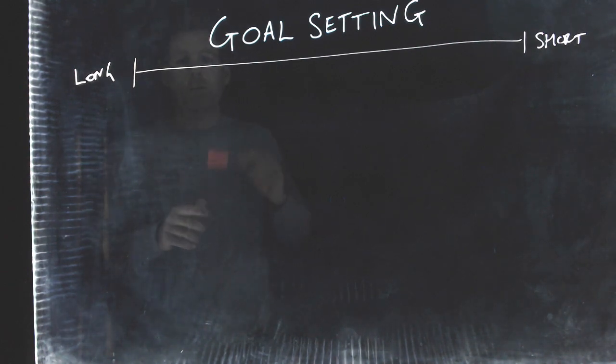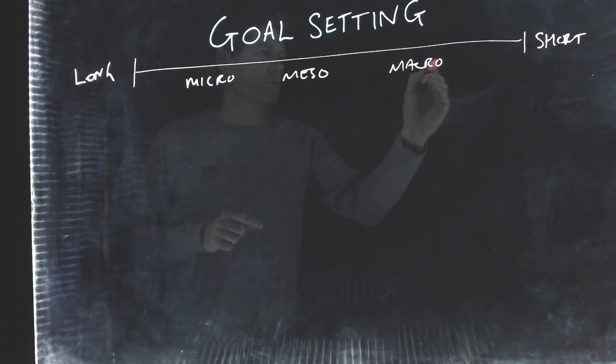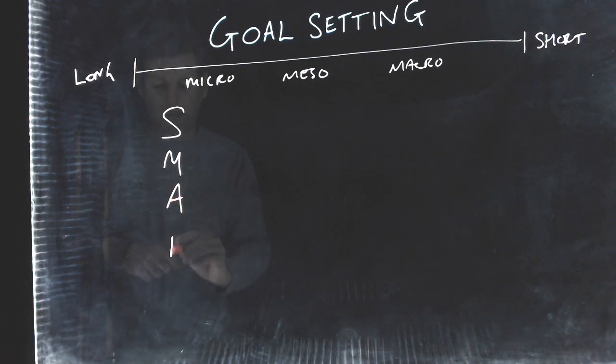We're going to talk a little bit more about macro, meso and micro cycles in a moment. So I'll just pop those on the board and we'll come back to them. And what we're going to talk about now is an acronym known as SMART. S-M-A-R-T. So remember SMART, if you're smart you're smart.